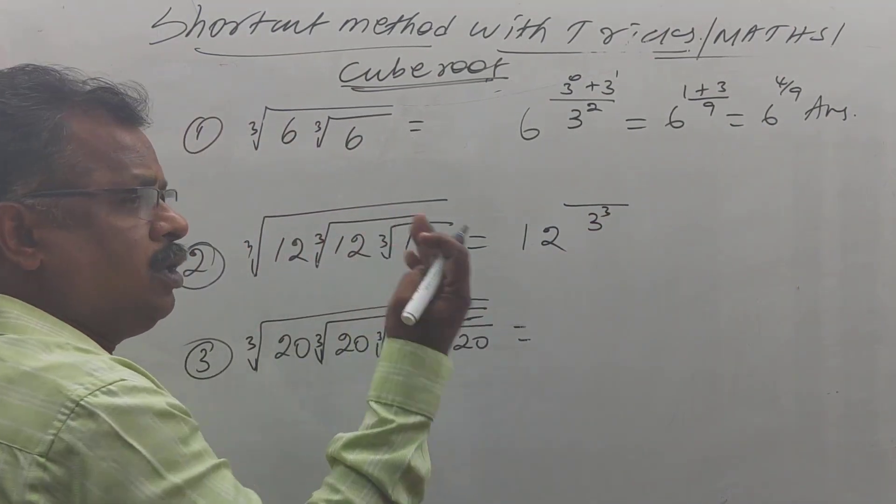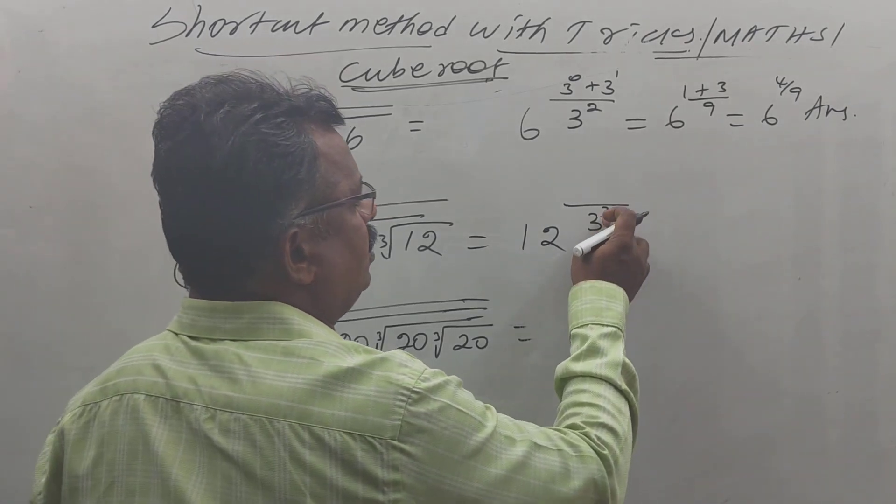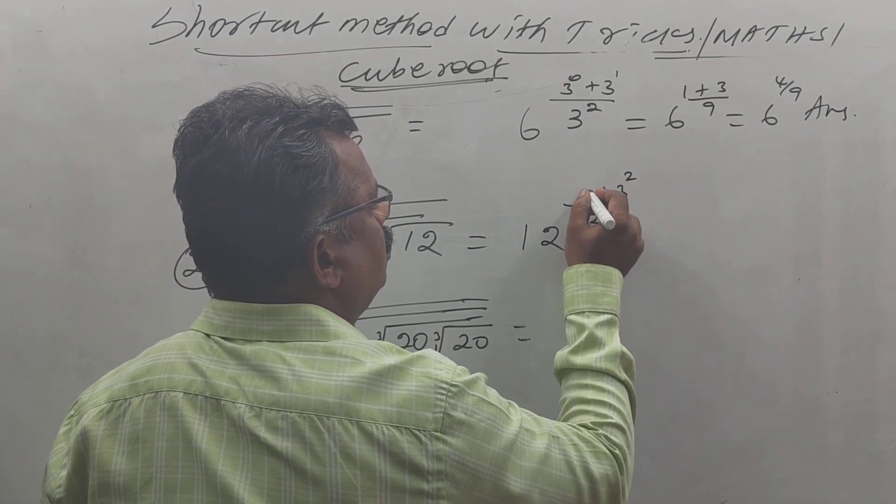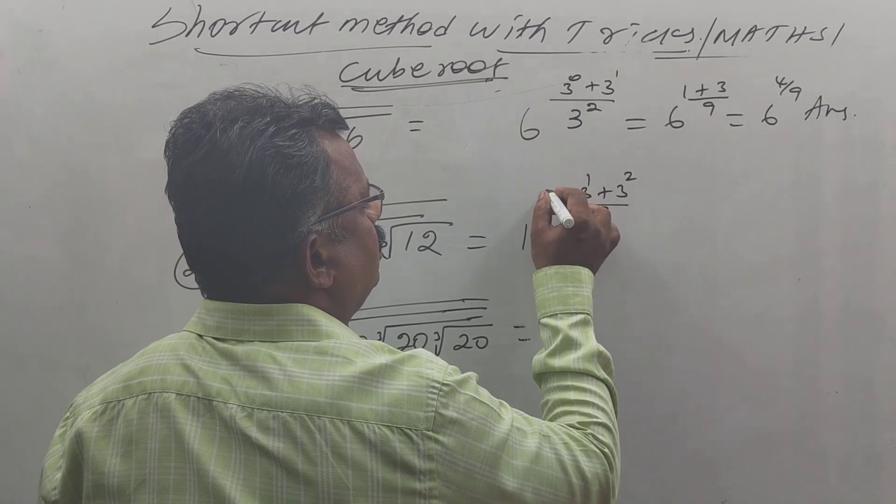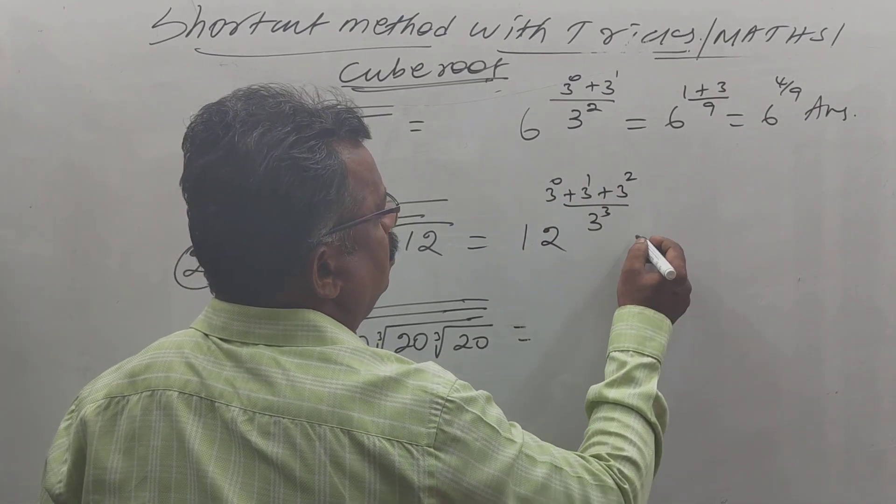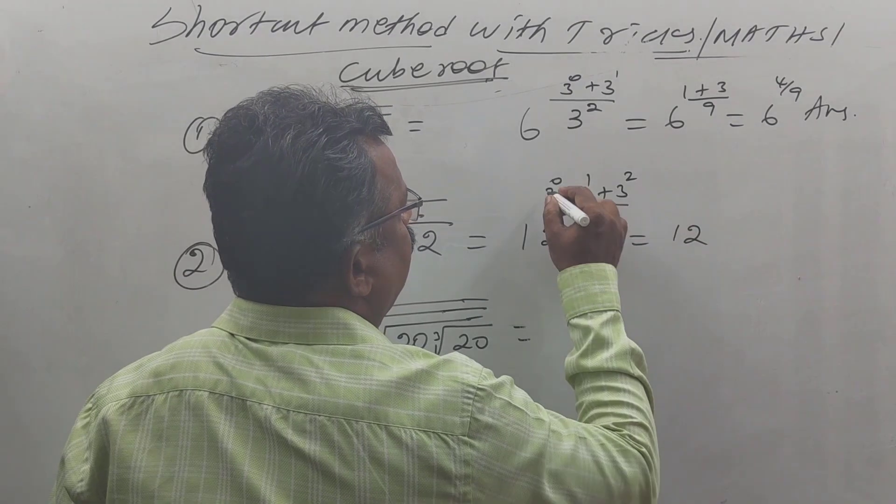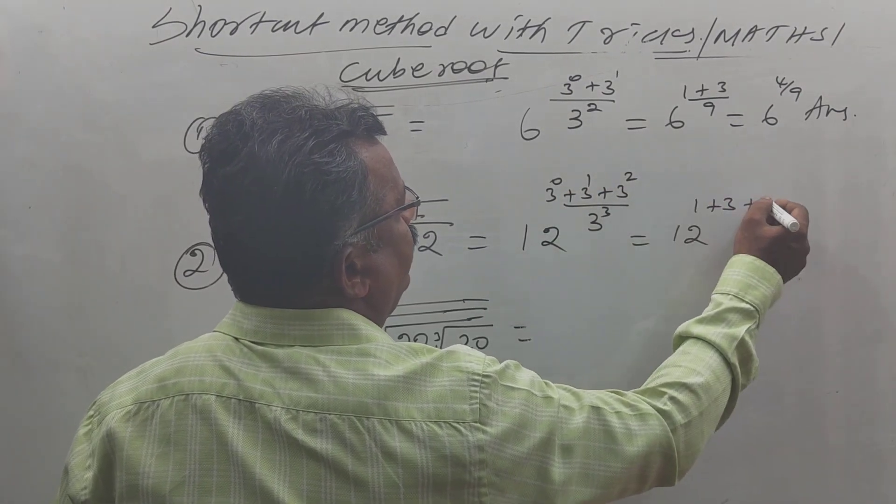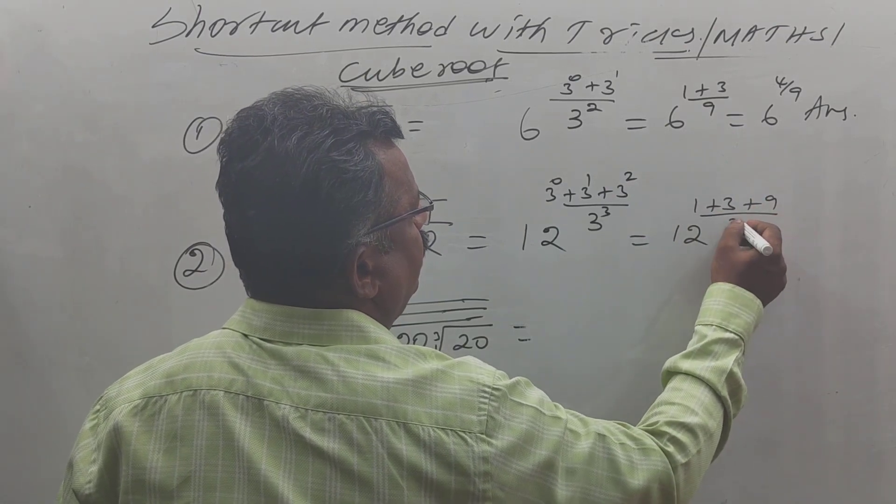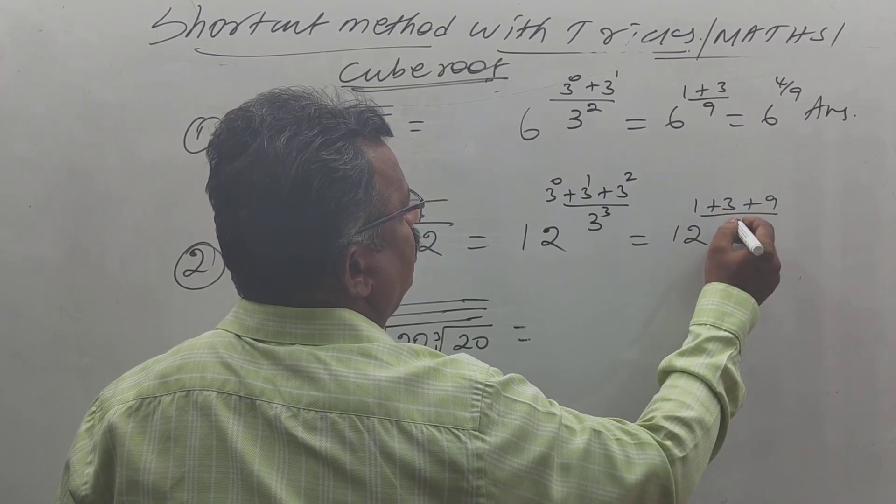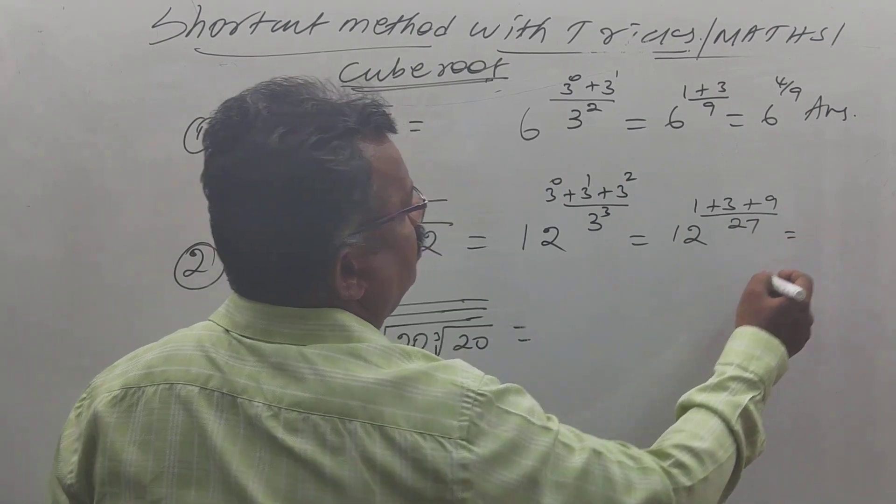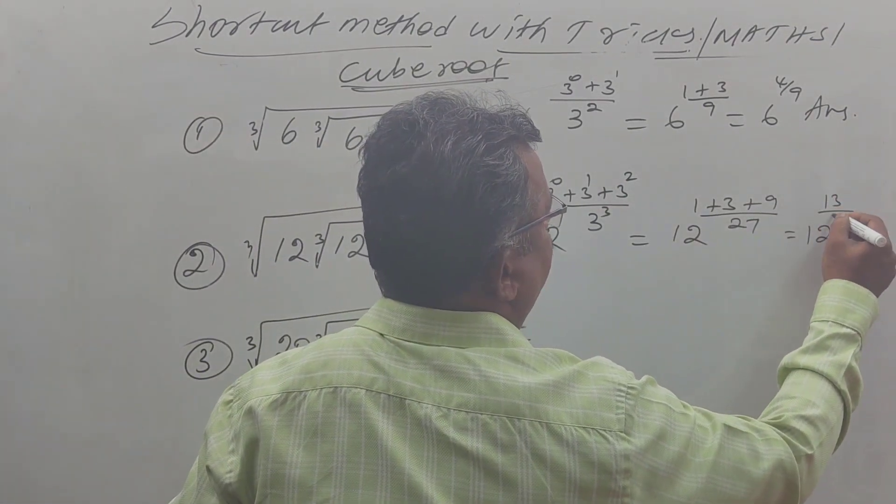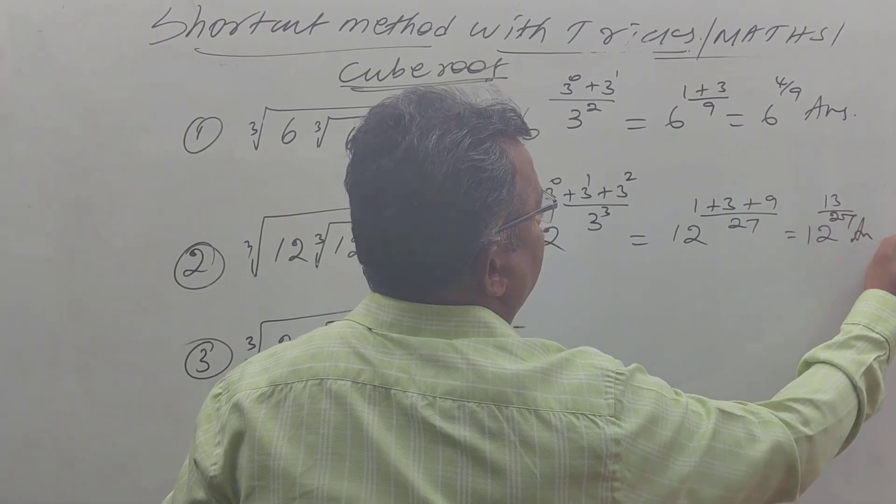How many cube roots? Three cube roots. So 3 power 3. Then 3 power 2, 3 power 1, 3 power 0. So 12. 3 power 0 is 1, 3 power 1 is 3, 3 squared is 9, by 3 power 3 is 27. Then 13, but 12 power 13 by 27 is the answer.